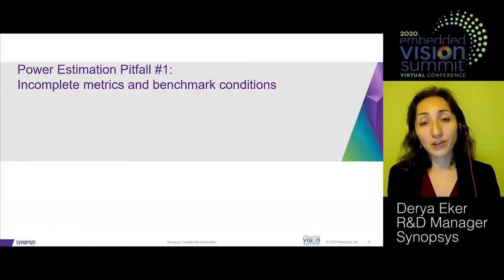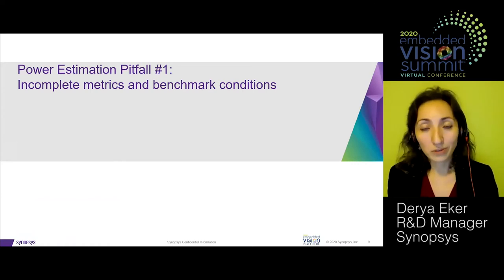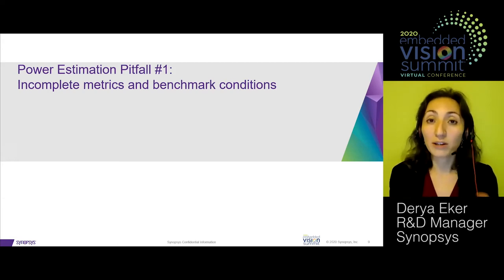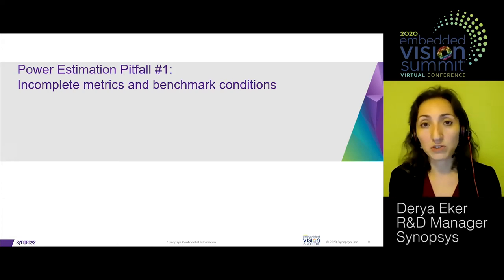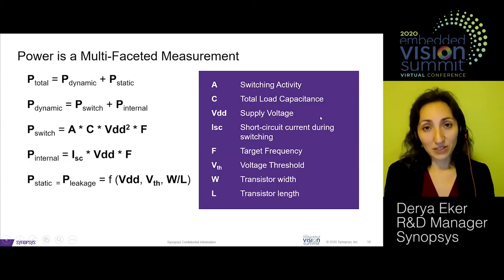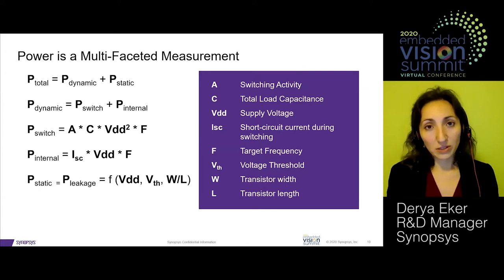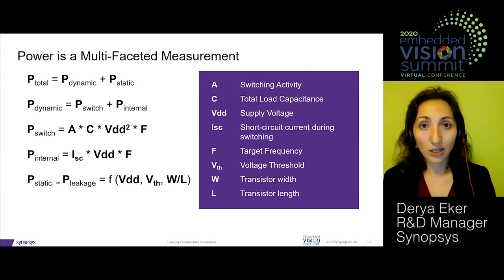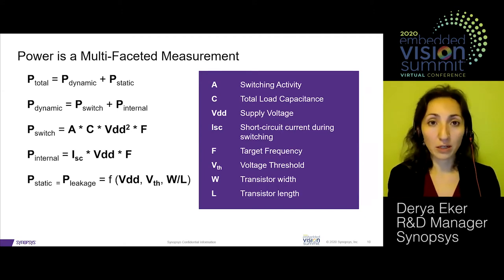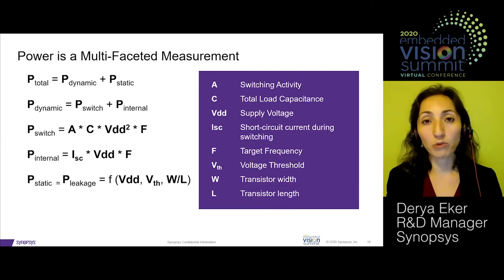In the world of AI inference engines, there are a number of metrics quoted to evaluate designs. Let's look at each of these metrics and their shortcomings. The goal of low power is to reduce each component contributing to power, so that the lower the power consumption of each component, the lower the overall power.